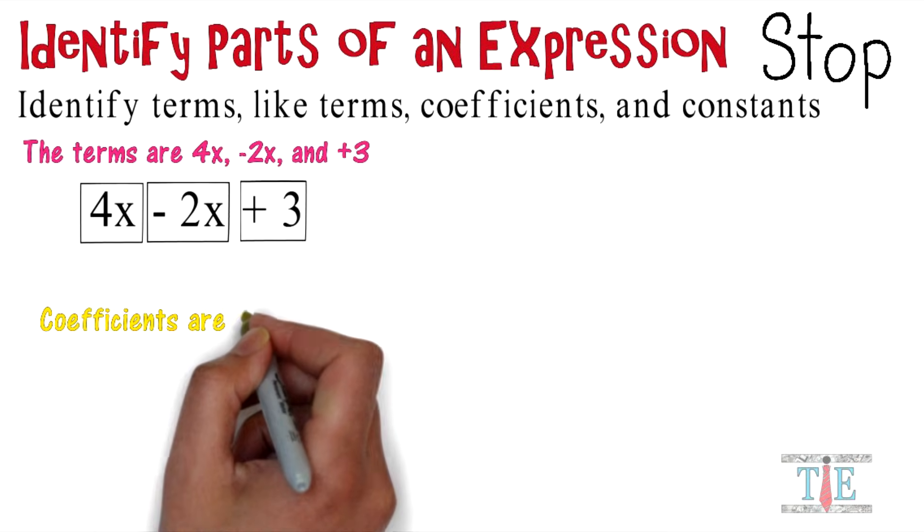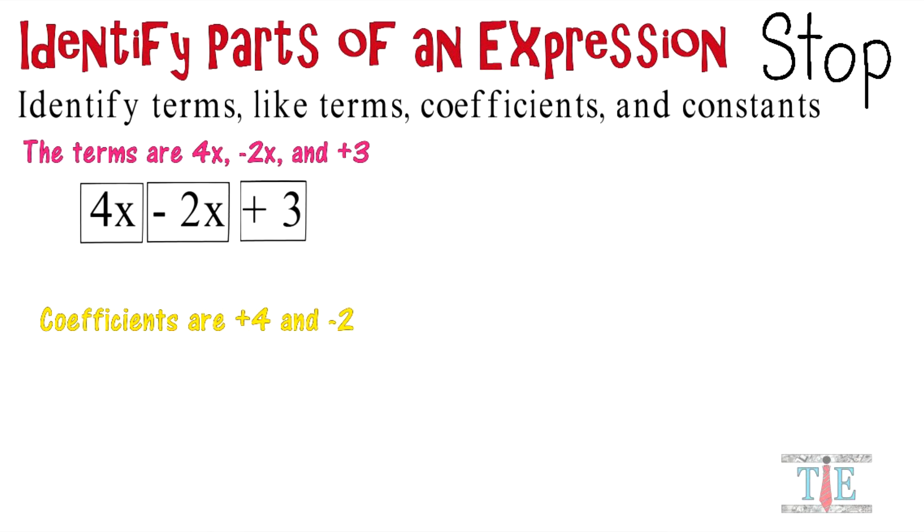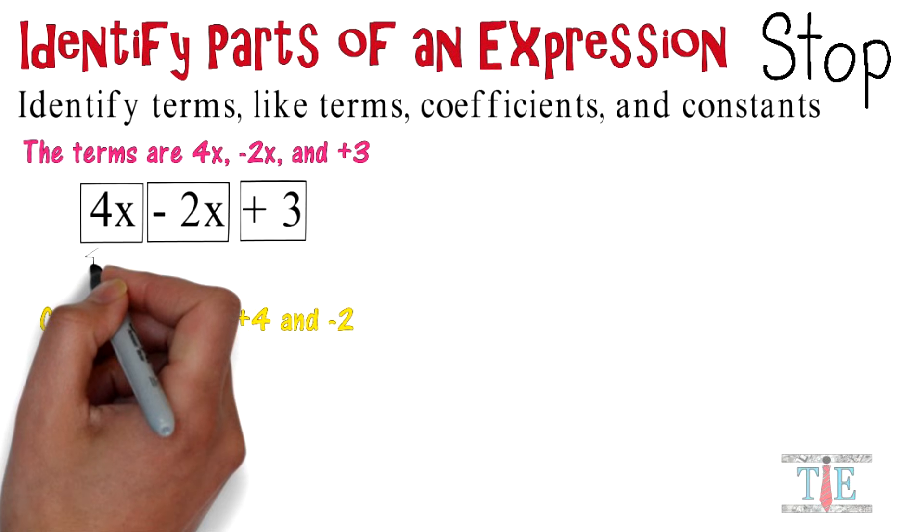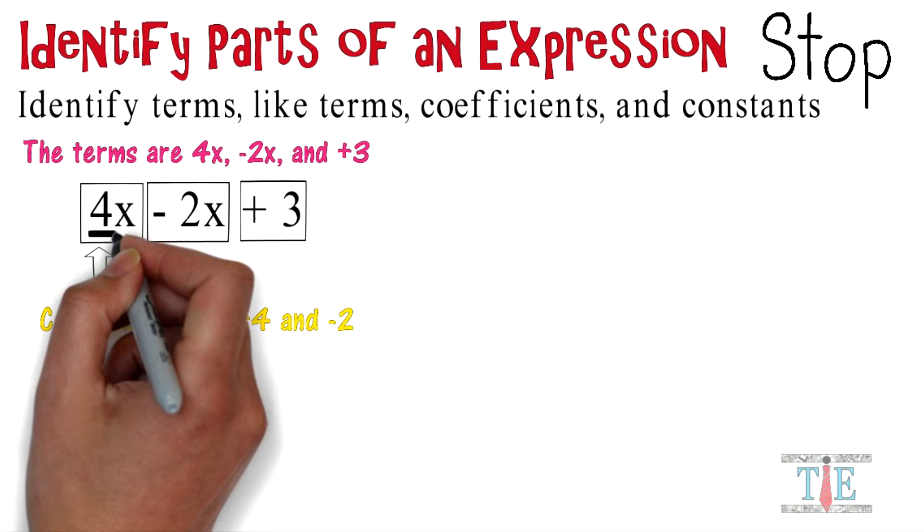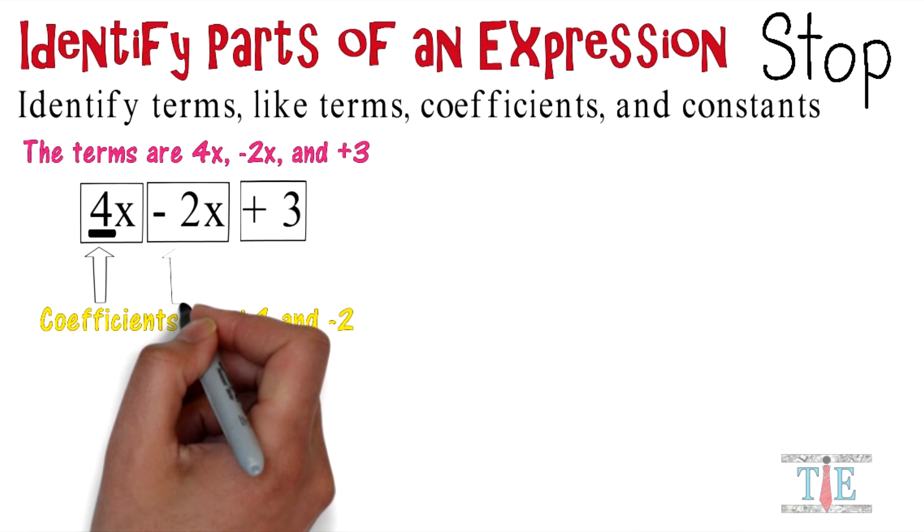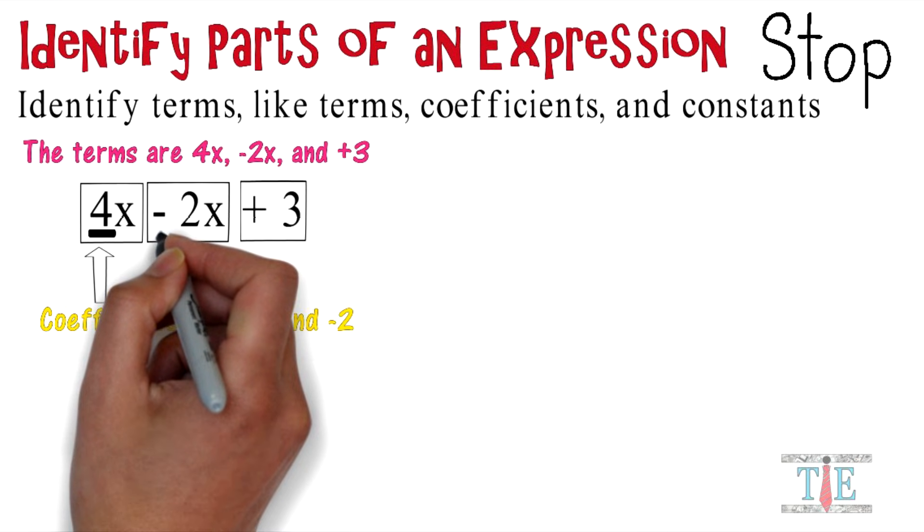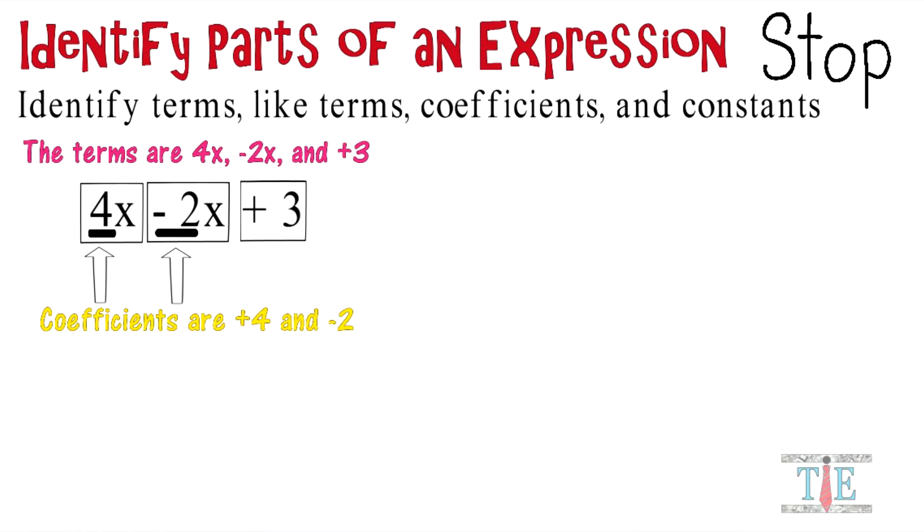The coefficients are in front of the variables. Notice a 4 is in front of the x. The other coefficient is negative 2. That's also in front of the variable x.